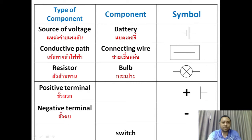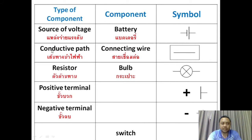Let's read the table: type of component, component, and symbol — vocabulary words. Number one: source of voltage. That component is called a battery. The symbol of the battery is this one.